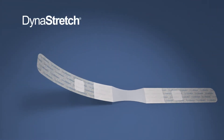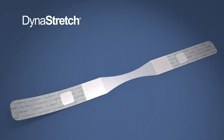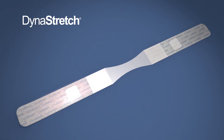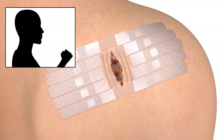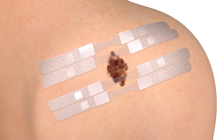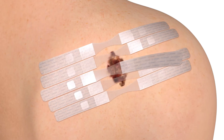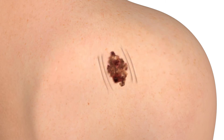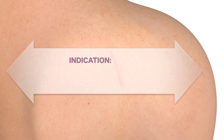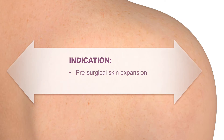Dynastretch is an atraumatic preoperative skin expansion device. The soft, stretchable adhesive fabric and the dynamic silicone elastomer both have an inherent elasticity which allows patient mobility as the device works. The product is applied topically one to two weeks pre-op and is simple to manage and painless to remove. For surgical removal of a skin defect or flap, Dynastretch is indicated when the resulting wound is too large for primary closure under tolerable tension.